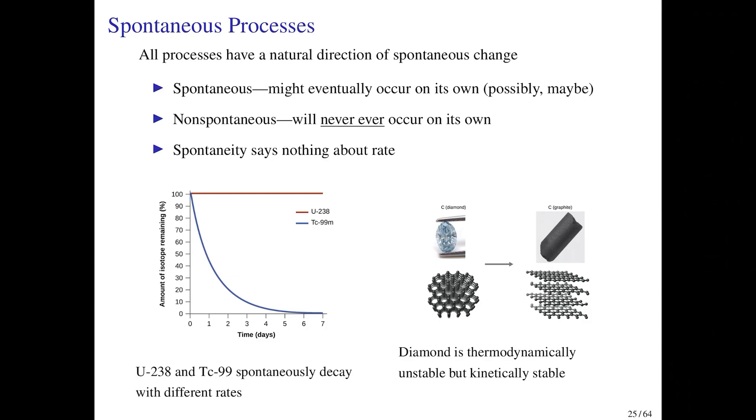It could occur—at least it's in the realm of possibility. Contrast that with the definition of a non-spontaneous process, which is very harsh: a non-spontaneous process is one that will never ever occur on its own. The reason for the difference between the two definitions—why is the definition of spontaneous process so wishy-washy? It's because in thermodynamics, while you can predict whether or not a process will be spontaneous, that doesn't tell you anything about the rate.